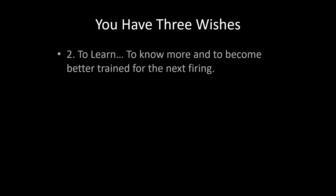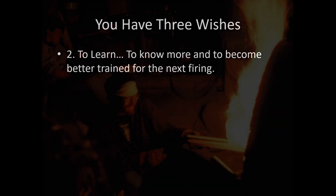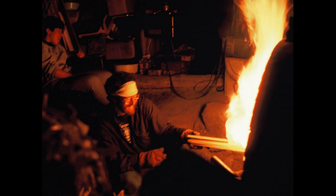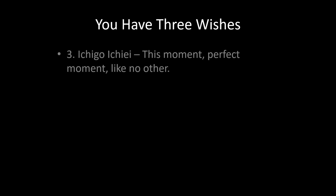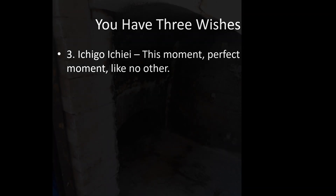Another wish is you want to learn, you want to know more, you want to become better trained for the next firing. Here's an image of the first firing I participated in in Japan — you can see I'm really happy. If you have three wishes, Ichigo Ichie is an expression that comes from tea ceremony, meaning 'this moment, perfect moment, like no other.' That goes back to the idea of the Yohan of community.